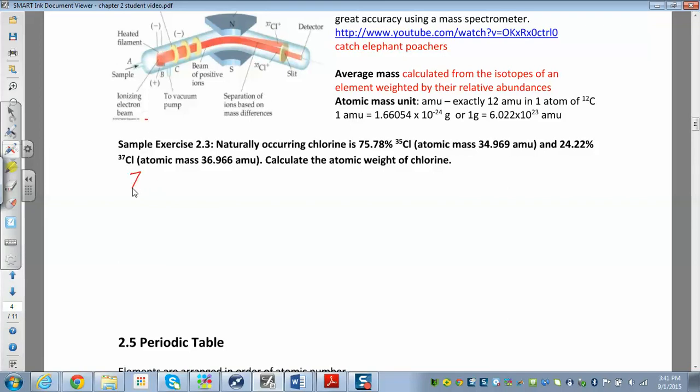So we have 75.78 percent. So to get rid of the percent sign, just divide that by 100. That is your percent abundance. And then multiply it by the mass. The mass is 34.969.